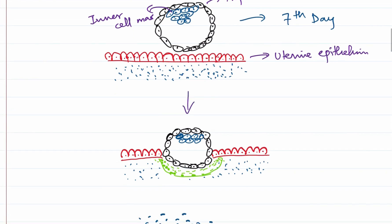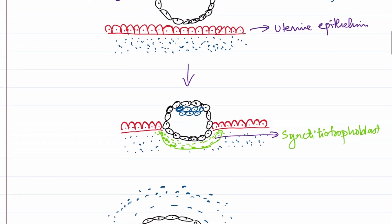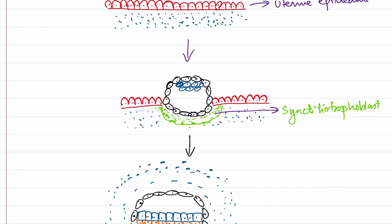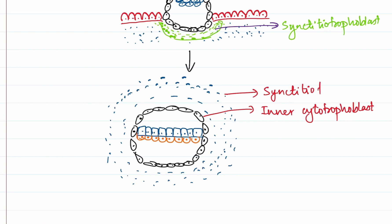Once implantation has occurred, we see the differentiation of the trophoblast into two layers. The one shown here in green is the syncytiotrophoblast. So there is a syncytiotrophoblastic layer. After implantation, the trophoblast gets differentiated into an inner cytotrophoblast and an outer syncytiotrophoblast.